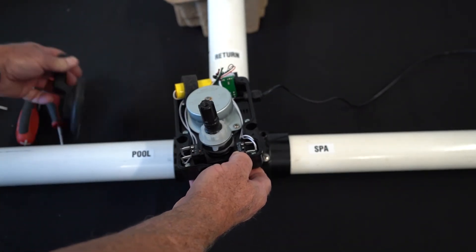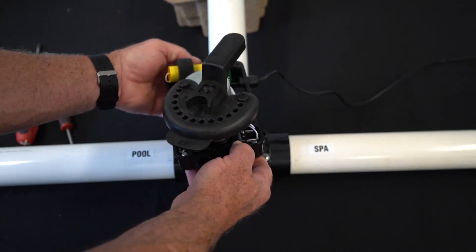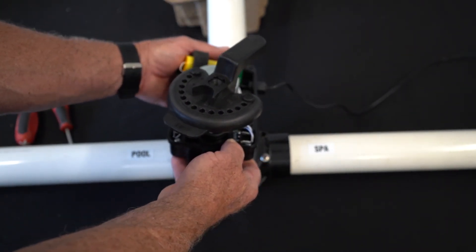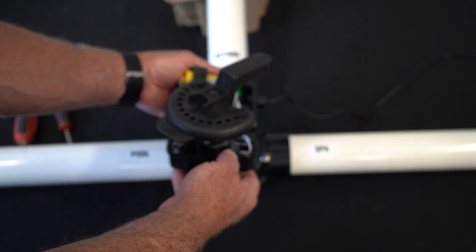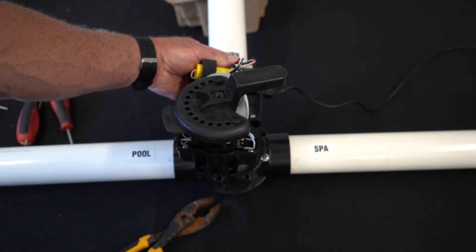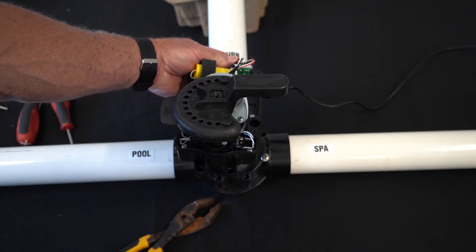Now what we want to do is make sure that we're in the position that we want. So you're going to go in the reverse position. And of course, here, we're closing off the spa.